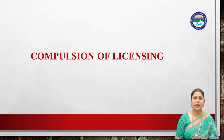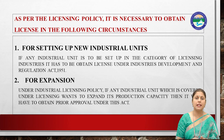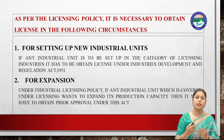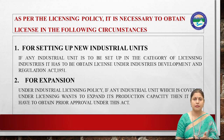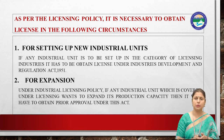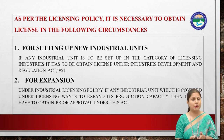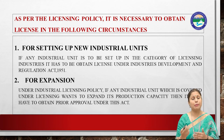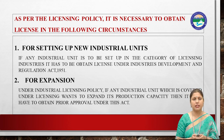Next is the compulsion of licensing. As per the licensing policy, it was necessary to obtain a license in the following circumstances. First, for setting up new industrial units — any new company or entrepreneur who wanted to set up an industry in India had to obtain a government license. Second, for expansion — if an existing industry or unit wanted to expand or set up new units, it was necessary to have a license for expansion.